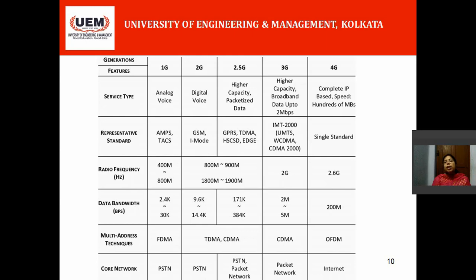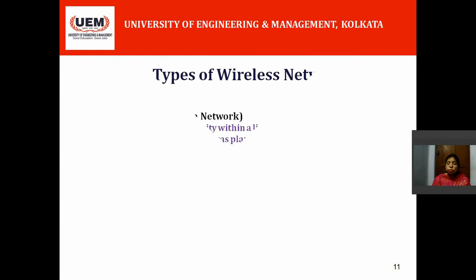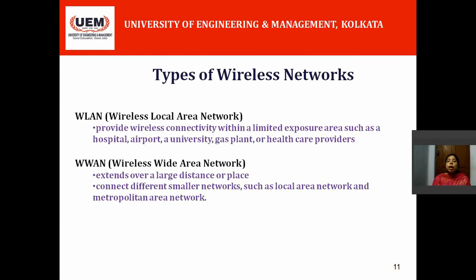In our next lecture, we will go through first generation, second generation, and so on, one by one in detail. Before that, let's have an introduction to different types of wireless networks. WLAN — Wireless Local Area Network — provides wireless connectivity within a limited exposure area, such as a hospital, airport, university, gas plant, or healthcare providers.